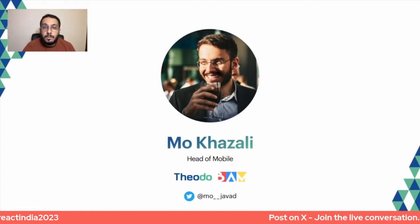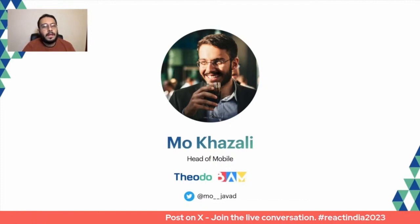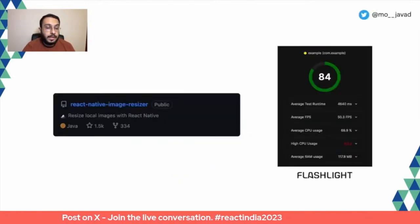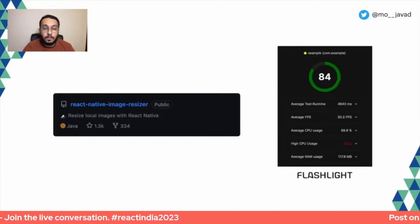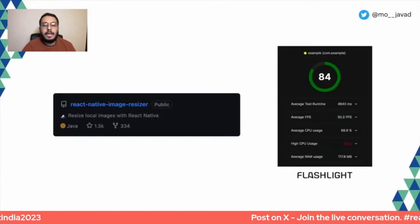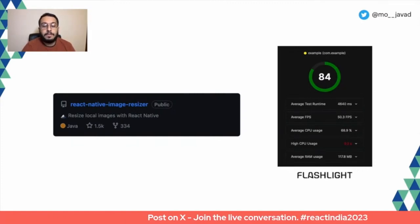You may know us by another name — BAM is our mobile team. We've built various open source projects like the React Native Image Resizer Library and more recently Flashlight. This is all to say that we are incredibly passionate about React Native and mobile development in general.